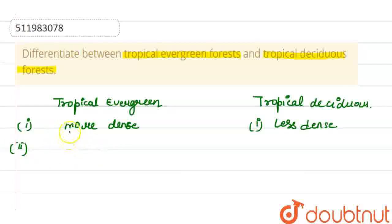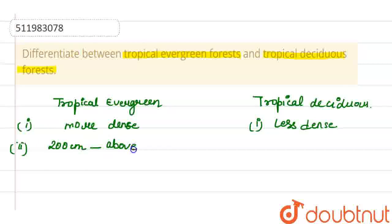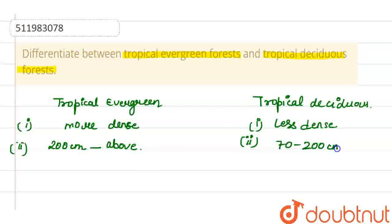The second difference is that tropical evergreen forests are found in regions where rainfall is 200 cm or above.